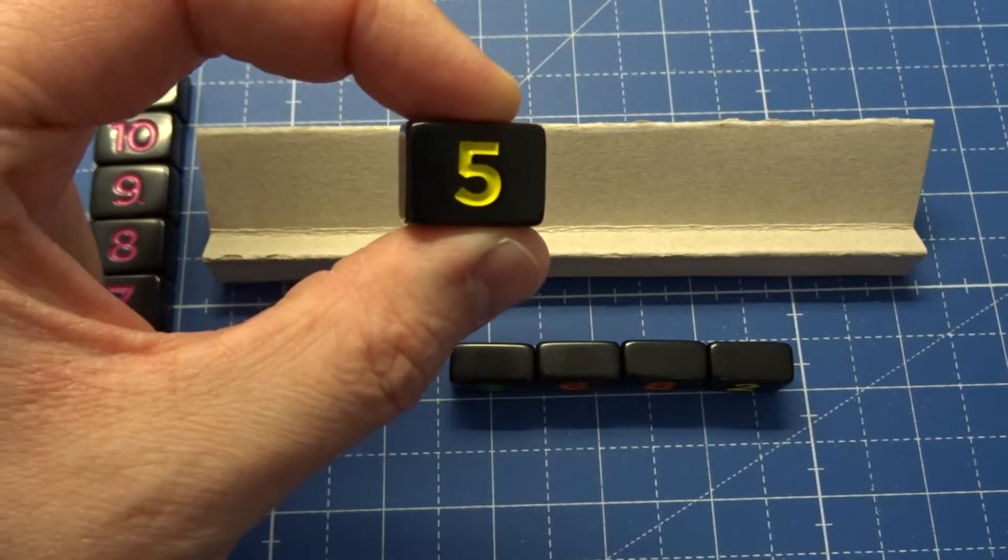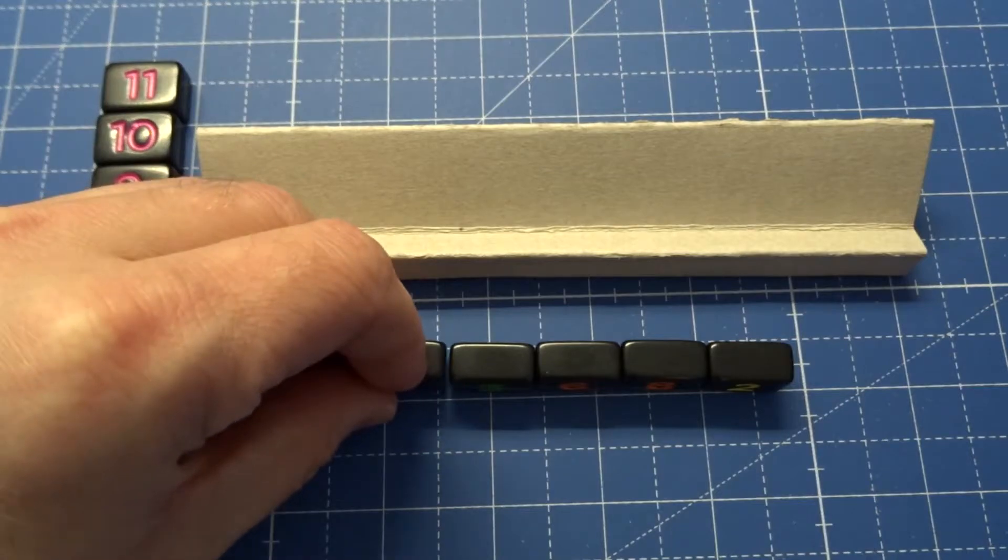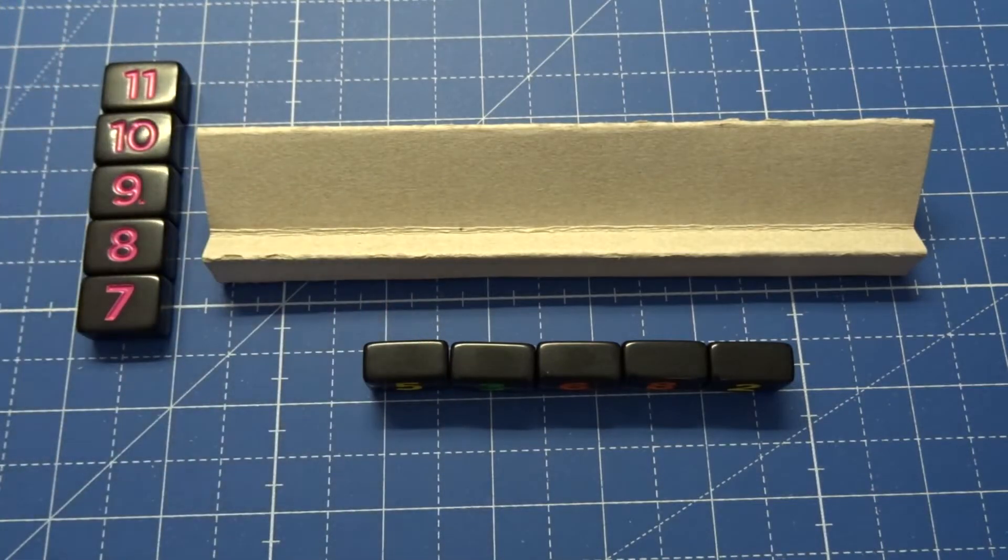On these tiles are numbers from 1 to 11 in different colors. The objective of the game is to bring these tiles into a descending order, separated by color.